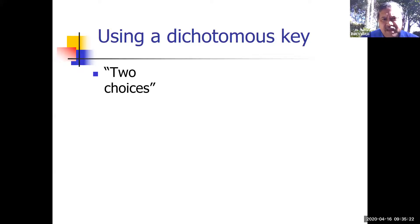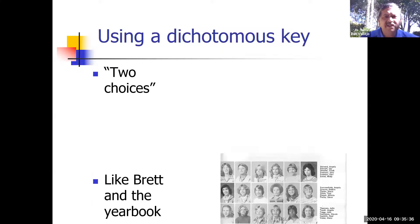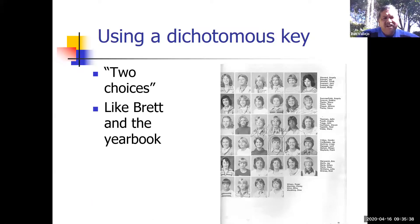What that means is there was a division, a difference—two choices, two very distinct choices. When you use the dichotomous key, I liken it to the yearbook. Back in the day we used to get a black and white yearbook like this at the end of the year.